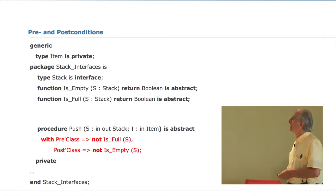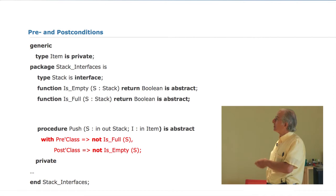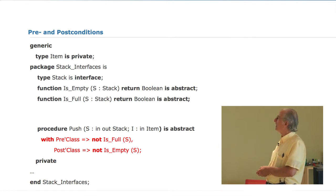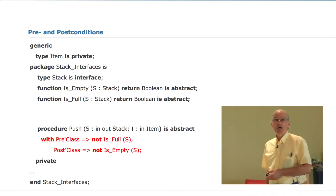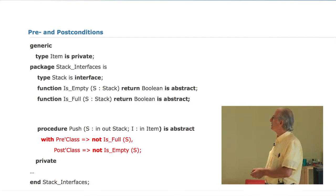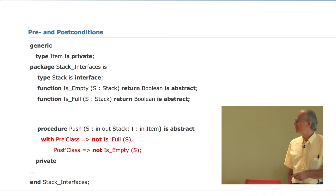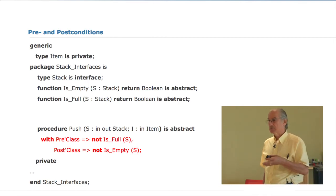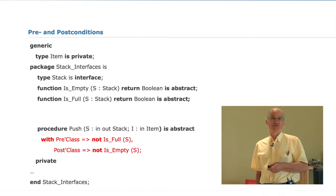A typical example: we have a package that offers an interface for stacks. There are some functions defined, and we say that the procedure push has a precondition — a statement of what must be true before this routine is called. The precondition is that the stack is not full when you want to push something on it, assuming it has a finite capacity. And the post-condition is that the stack is not empty on return. Pre- and post-conditions are, I have to confess, an old idea in programming languages, around for about half a century since formal methods were proposed for verifying program correctness.